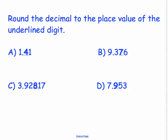So in example A, we are going to round 1.41 to the tenths place where the 4 is. We are going to look directly to the right of the 4, and there is a 1 there. Because 1 is less than 5, we know that we are not going to round up. And so in this case, our number is going to round to 1.4.